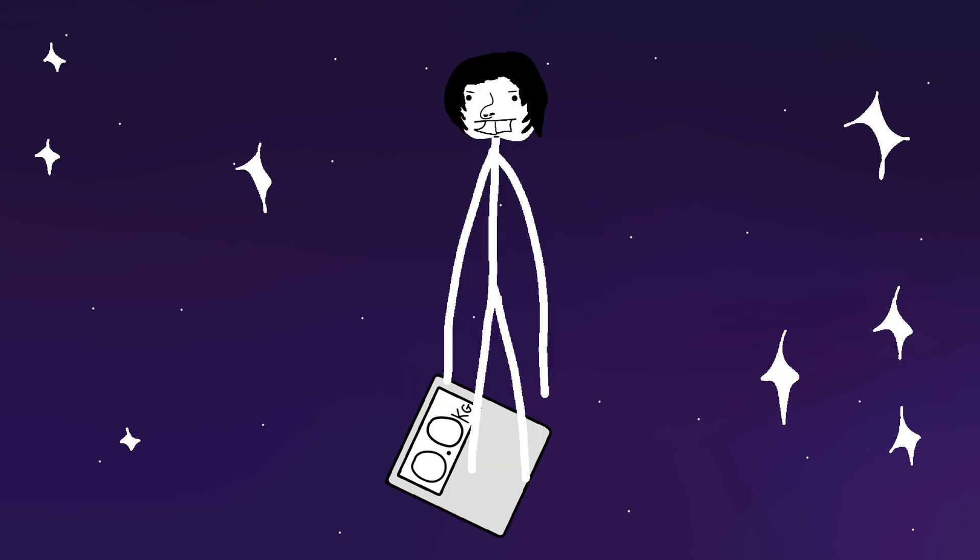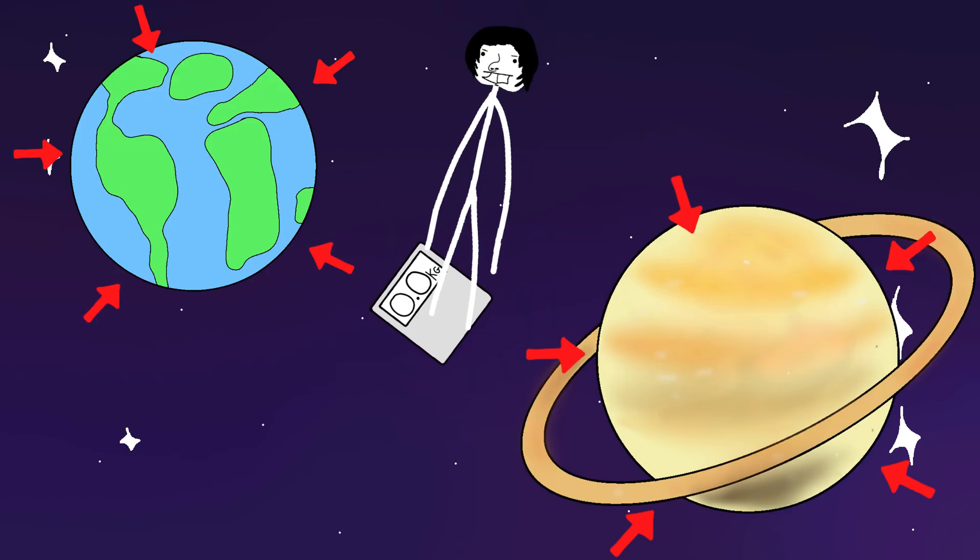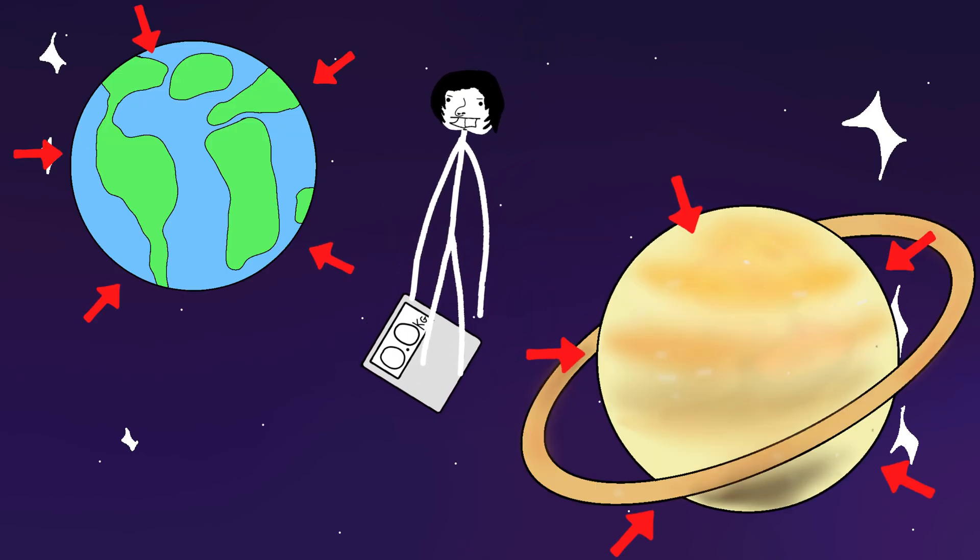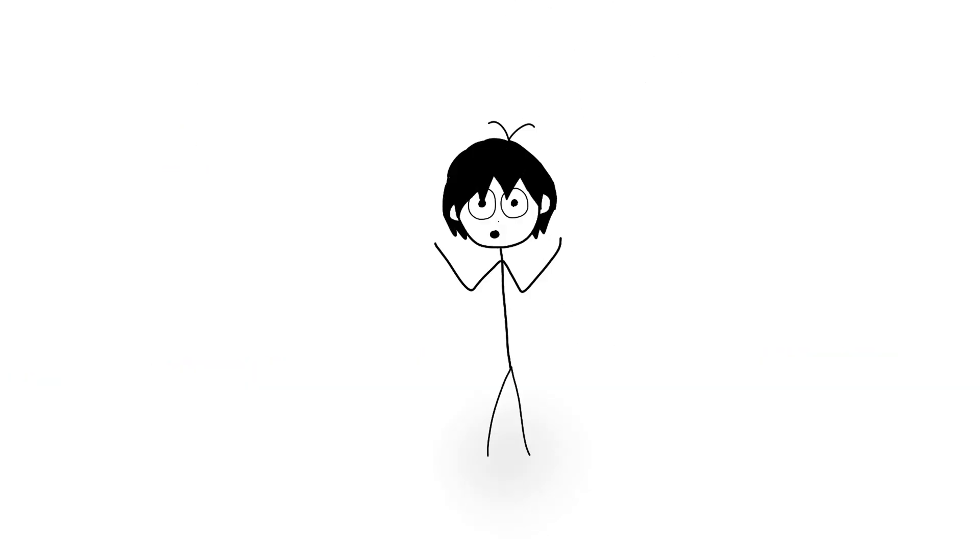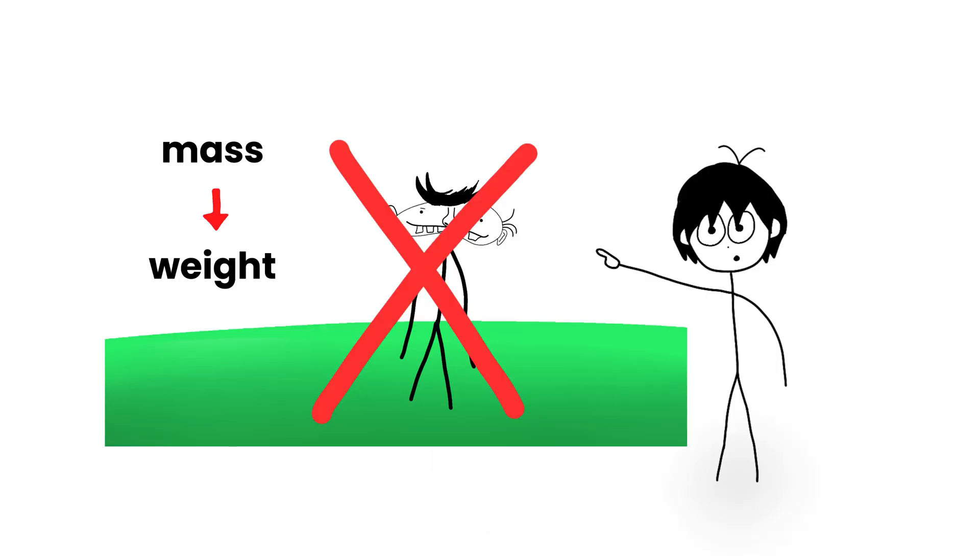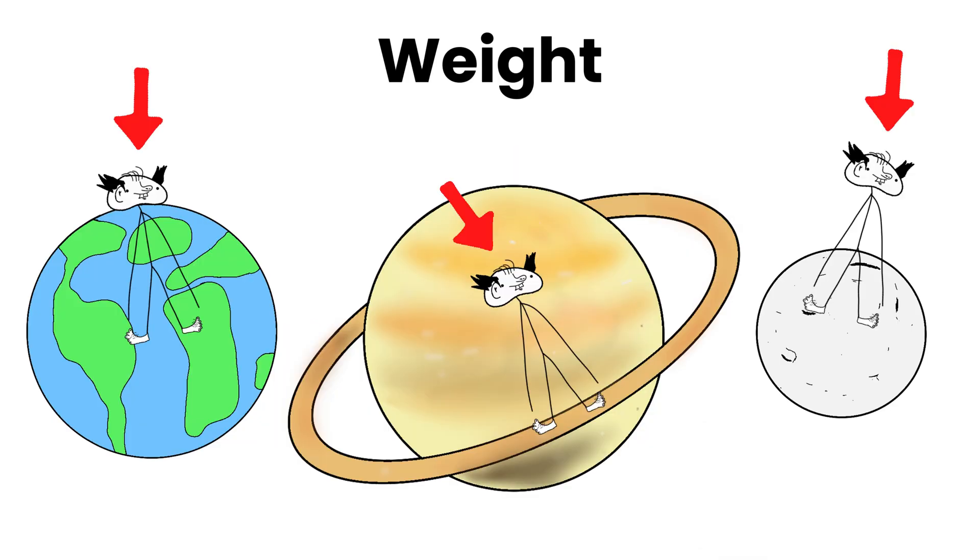If you take a scale to space and float over it, it's not going to show zero kilos because you've transcended matter. It's showing zero because there's no gravitational pull acting on you. Some people think that once you touch the ground, mass transforms into weight. Like they're the same thing in different states. But no, weight doesn't come from mass transforming. Weight is a consequence of mass being pulled by gravity.